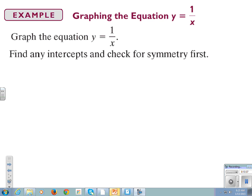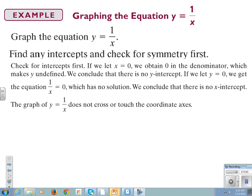Alright, y equals 1 over x. For intercepts, we know x cannot equal 0, or you get the zombie apocalypse, because you're not allowed to divide by 0. So it does not cross or touch any of the axes. No intercepts.